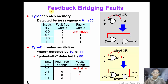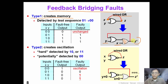One possible explanation is the feedback bridging fault. A feedback bridging fault can be difficult to detect. There are two types of feedback bridging fault. Type 1 can create memory. For example, consider the X and Z feedback bridging fault using the wire-OR fault model. We can model this circuit accordingly. Suppose we apply inputs 01, 10, or 11 — the outputs are all 1, which are the same as the good circuit.